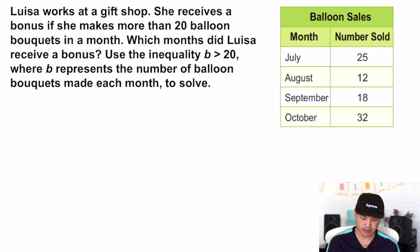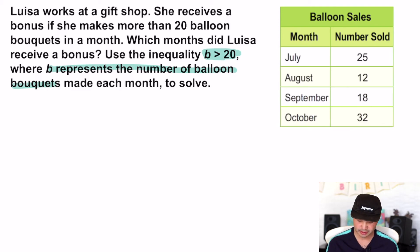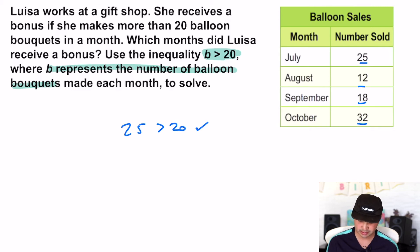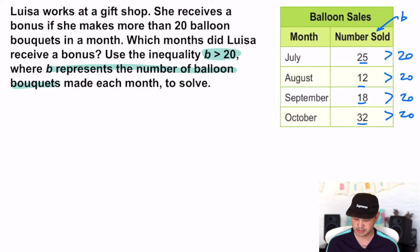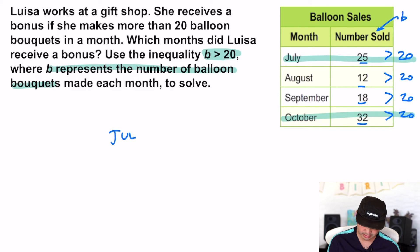Let's try a word problem. Luisa works at a gift shop and receives a bonus if she makes more than 20 balloon bouquets a month. Which months did Luisa receive a bonus? Using the inequality B > 20, where B represents the number of balloon bouquets made each month: 25 is greater than 20 — yes. Is the next value greater than 20? Nope. 18 is greater than 20? Nope. 32 is greater than 20? Yes. So which months did she receive a bonus? The two where it was greater than 20 — that would be July and October.